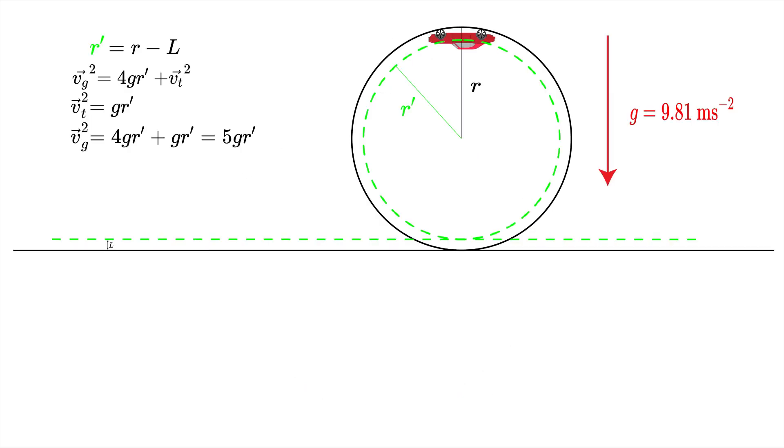Now by combining these two equations we get our final equation for the minimal velocity on the ground, which is a very simple equation.